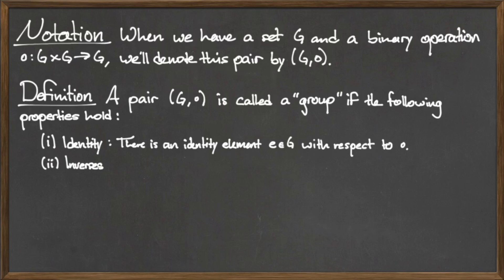The second property is the inverse property. Every element A in the set G must have an inverse, and that inverse must also be an element of G.